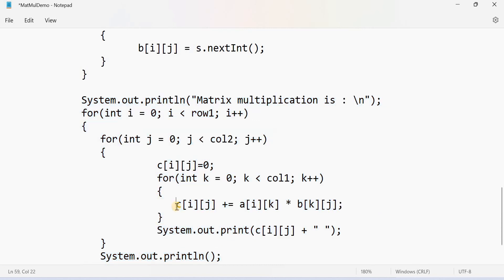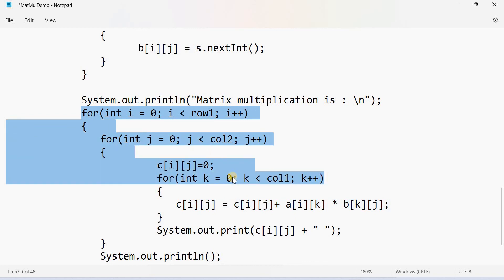This is the core part of our program. Here C[i][j] is equal to C[i][j] plus A[i][k] into B[k][j]. I am using the shorthand assignment operator, otherwise you can also write like this: C[i][j] is equal to C[i][j] plus A[i][k] into B[k][j]. Remember here we are going to get three for loops. What is the meaning of this C[i][j] equals 0? It is something like what we have seen earlier, sum equals 0. Initially we make sum value as 0 and then we will keep on adding all the numbers.